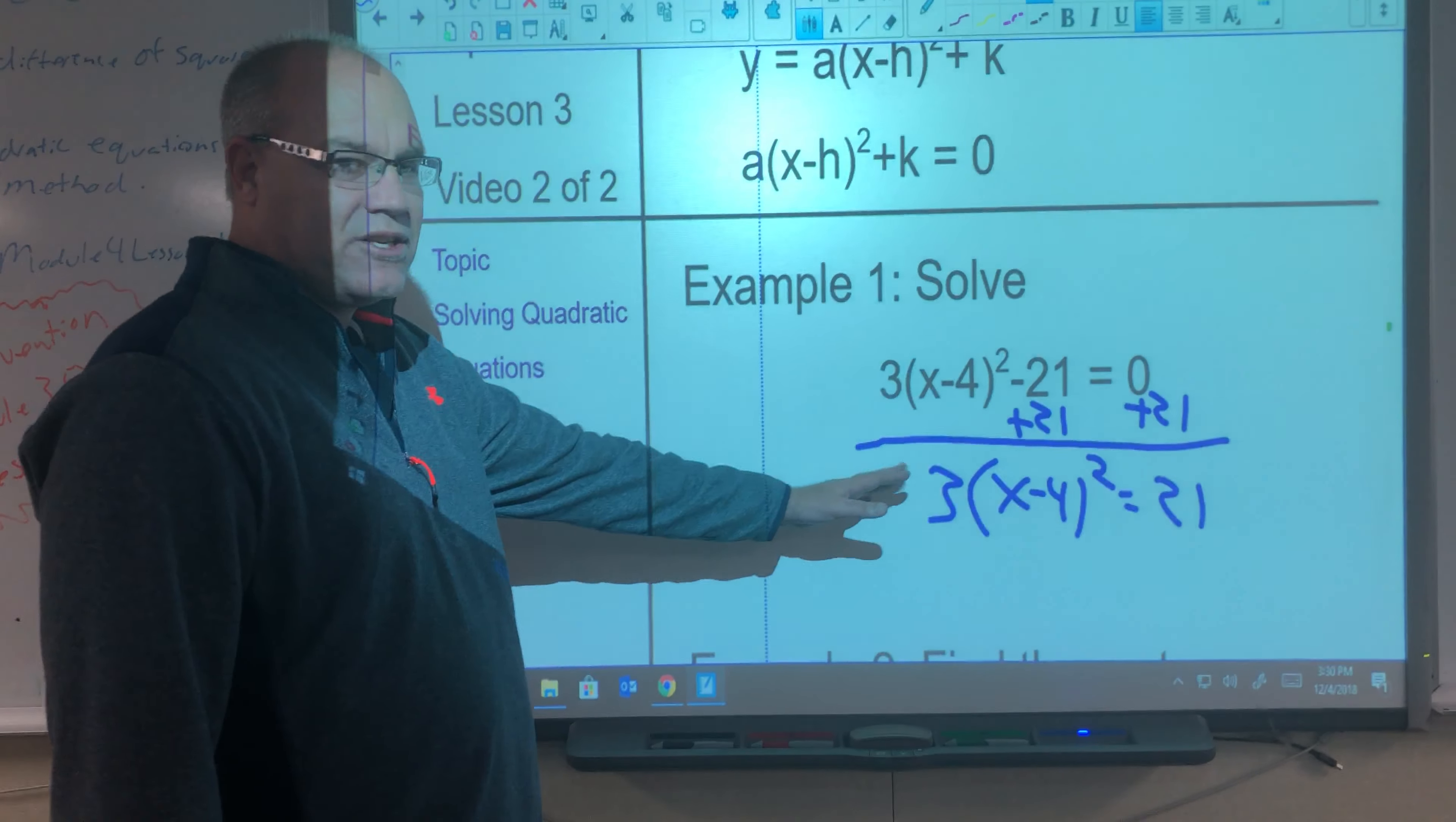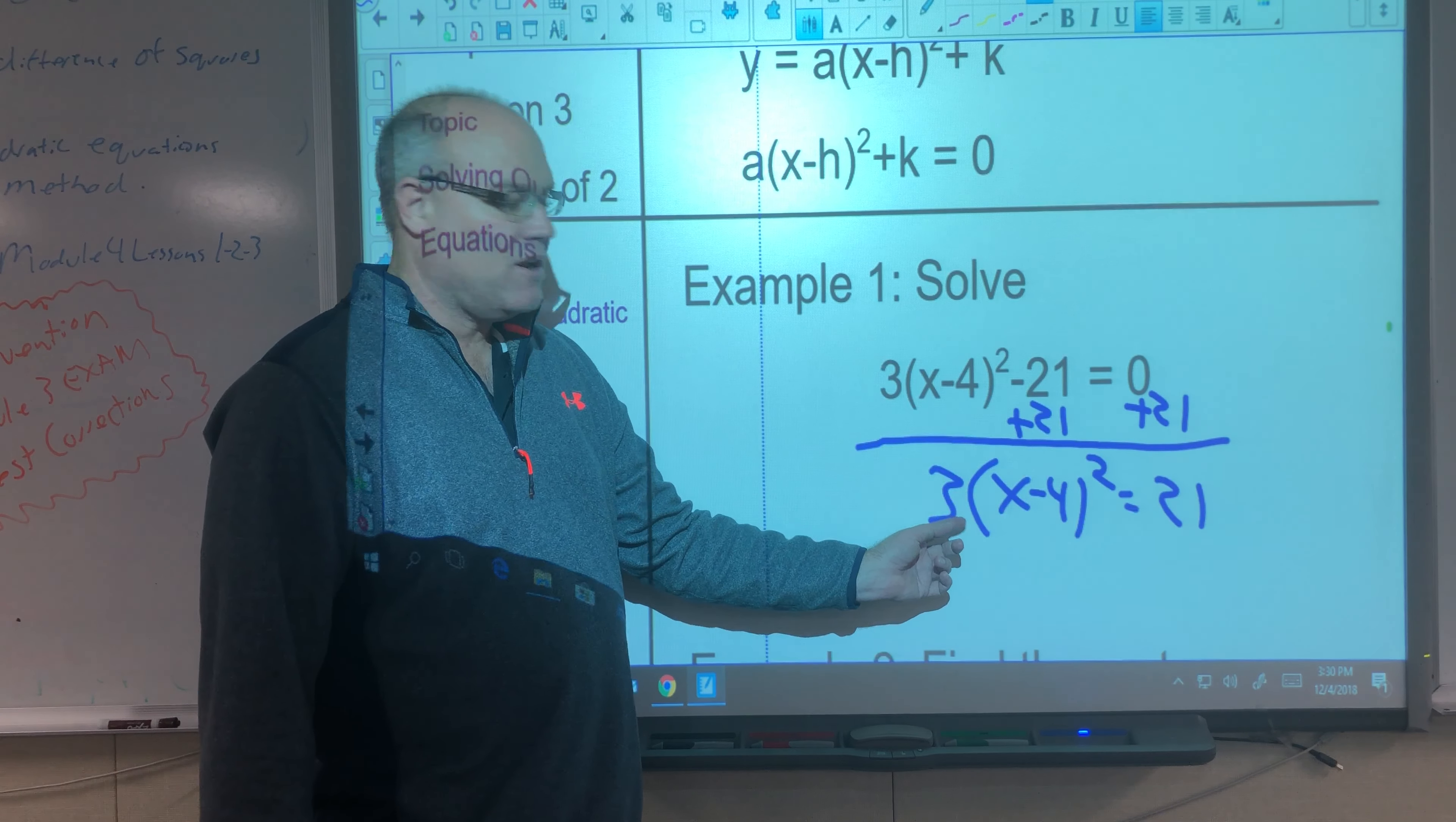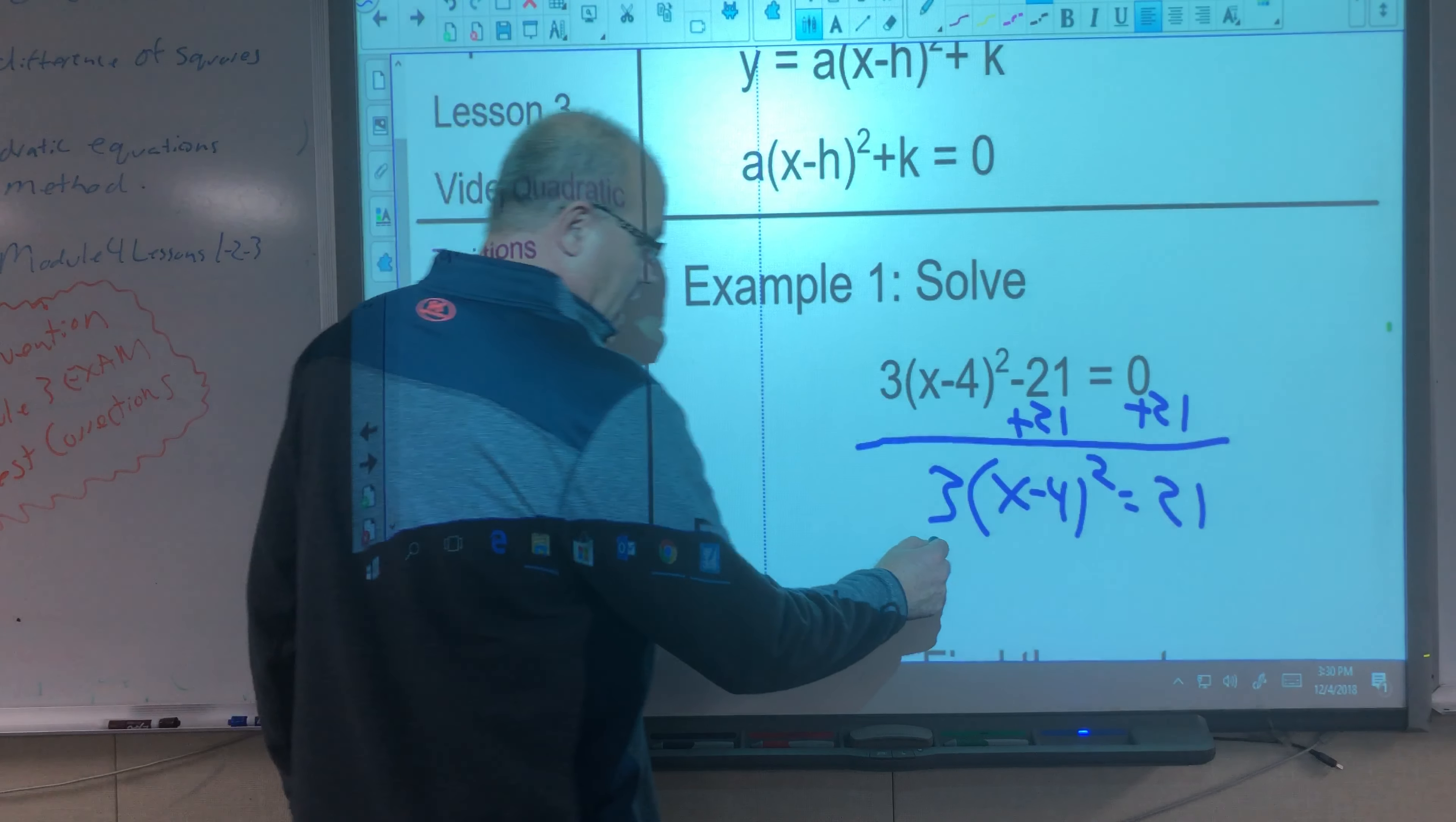Now we cannot distribute here because we have a binomial squared. Order of operations says we'd have to do the x minus 4 before we do multiplication. So how do we undo this 3 times the binomial? That's right, we're going to divide.